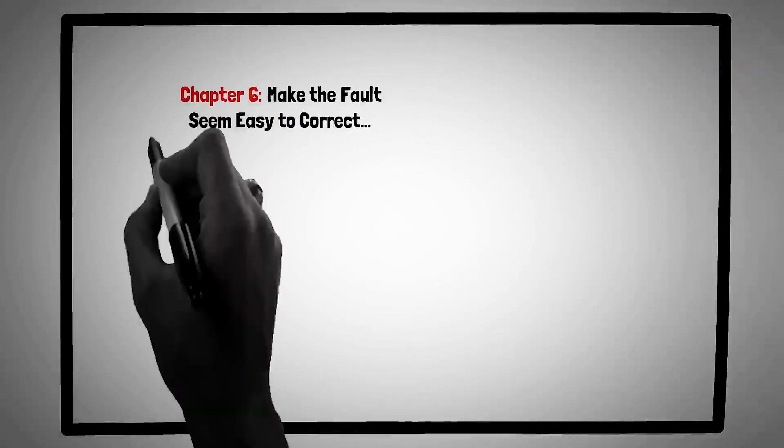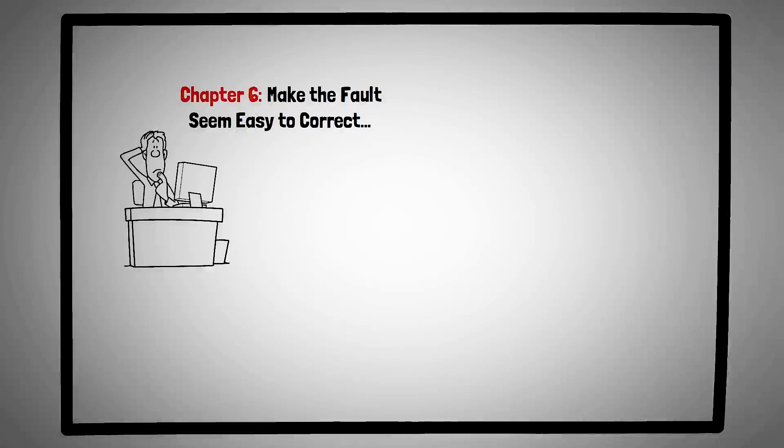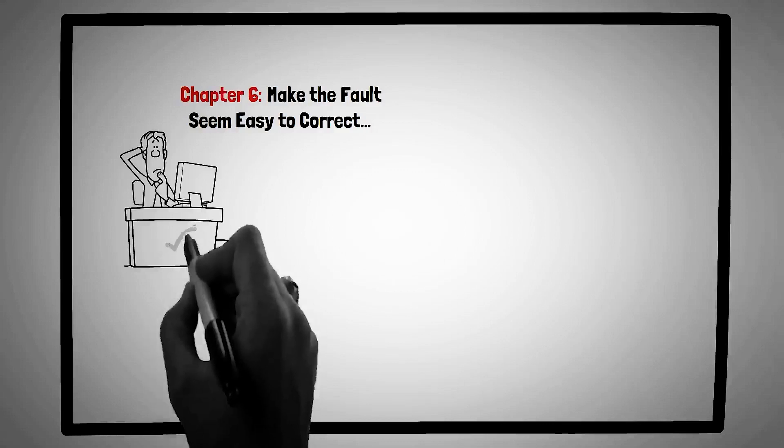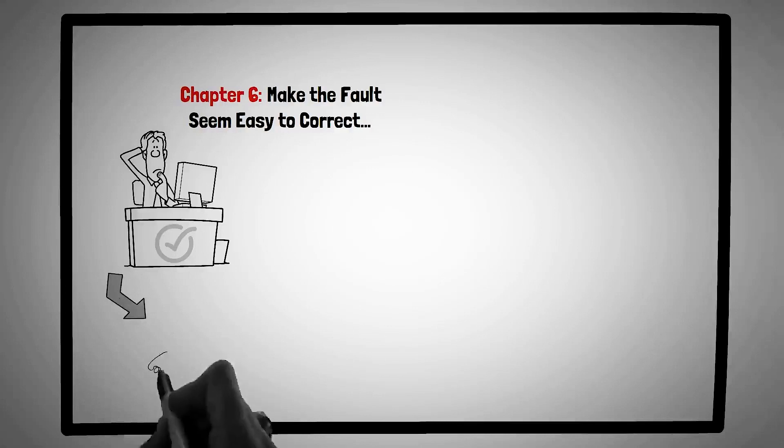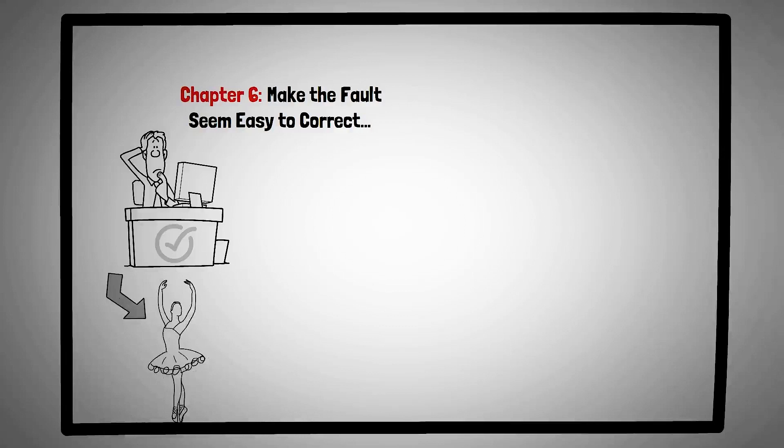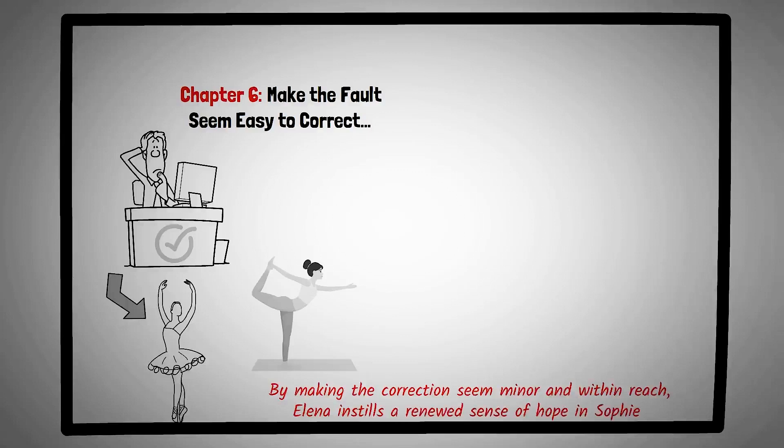Chapter six, make the fault seem easy to correct. The approach to addressing mistakes can greatly influence the outcome. This chapter offers a perspective on feedback, emphasizing the importance of framing corrections in a manner that feels approachable and achievable, thus motivating individuals to take corrective action. Consider the story of Elena, a dance instructor. One of her students, Sophie, struggles with a particular dance move, leading to frustration and dwindling confidence. Instead of highlighting the complexity of the move, Elena adopts a different tactic. She breaks down the move into simpler steps and says, it's just a matter of shifting your weight a bit more to the left, like this. You're almost there. By making the correction seem minor and within reach, Elena instills a renewed sense of hope in Sophie. With this new perspective and Elena's guidance, Sophie practices with renewed vigor and soon masters the move. Elena's approach not only addresses the mistake, but also ensures that the solution feels achievable, fostering a positive learning environment.